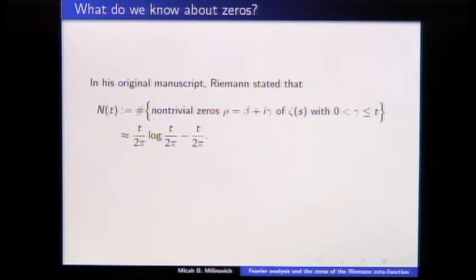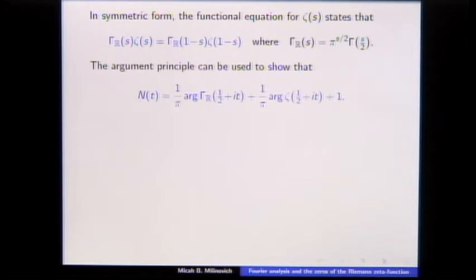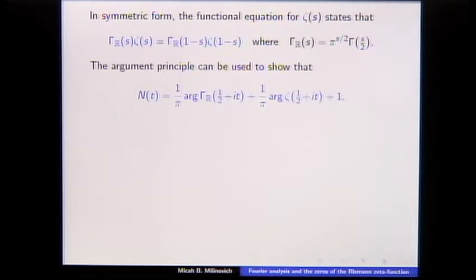In his original manuscript, Riemann said there are roughly this many zeros up to height T, without giving much justification. We can speculate he probably used the argument principle. If we complete the zeta function with the gamma factor it has a nice symmetric form, and using the argument principle carefully you can prove an exact formula for the number of zeros. One part comes from the pole — since the argument principle counts zeros minus poles — and it's basically one over pi times the argument of the completed function, then one over pi times the argument of zeta.